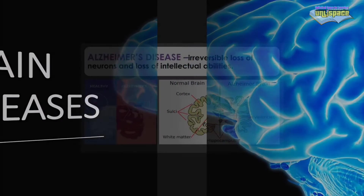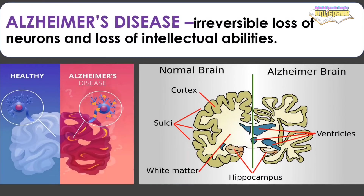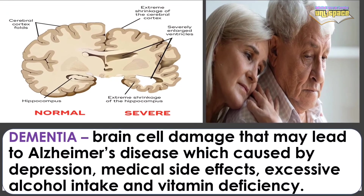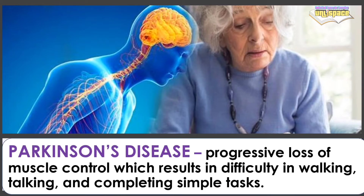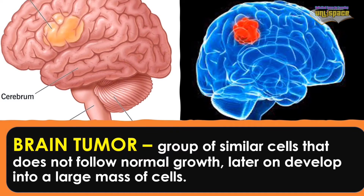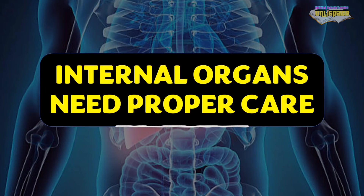Brain diseases. Alzheimer's disease involves the irreversible loss of neurons and loss of intellectual abilities. Dementia is brain cell damage that may lead to Alzheimer's disease, caused by depression, medical side effects, excessive alcohol intake, and vitamin deficiency. Parkinson's disease is the progressive loss of muscle control, resulting in difficulty in walking, talking, and completing simple tasks. Brain tumor is a group of similar cells that does not follow normal growth and develops into a large mass of cells. Your internal organs need proper care so they can perform well, keeping your body cells and tissues alive.